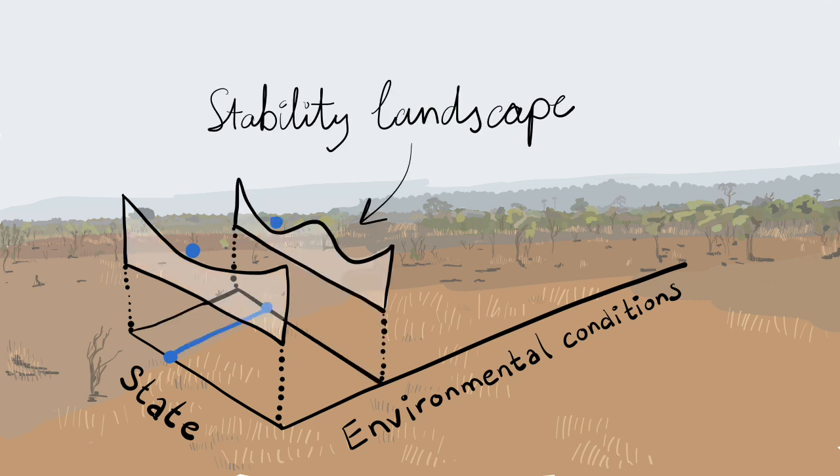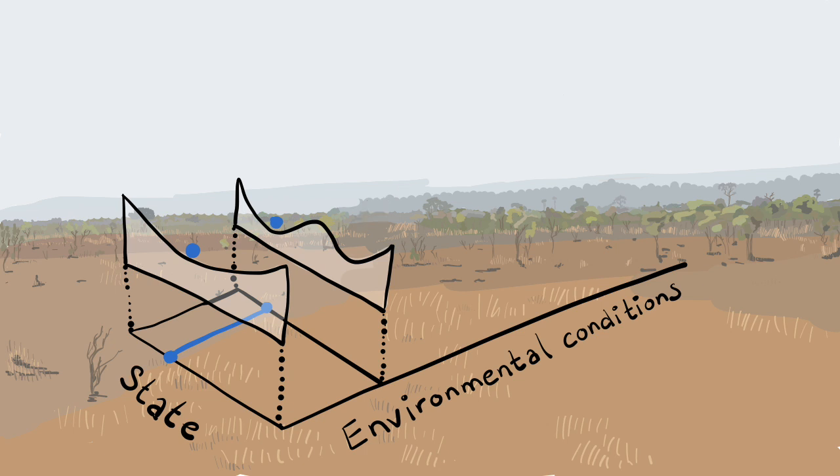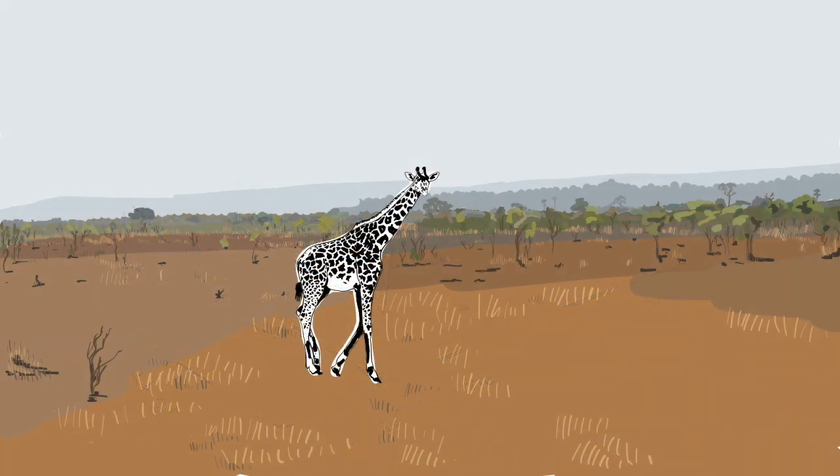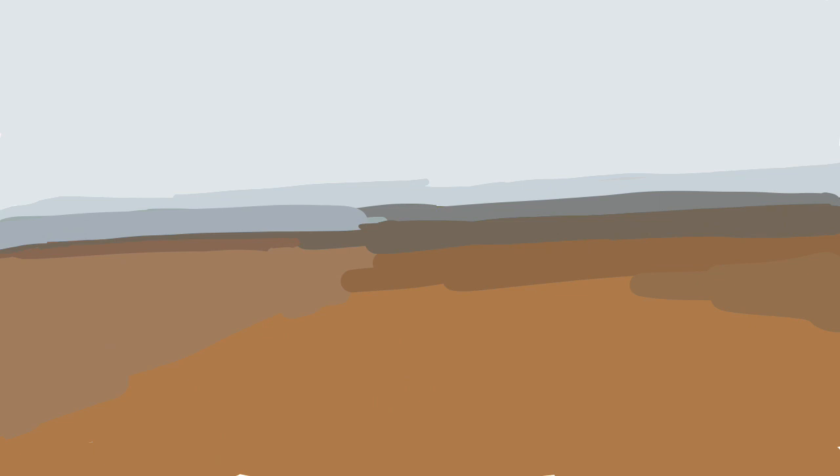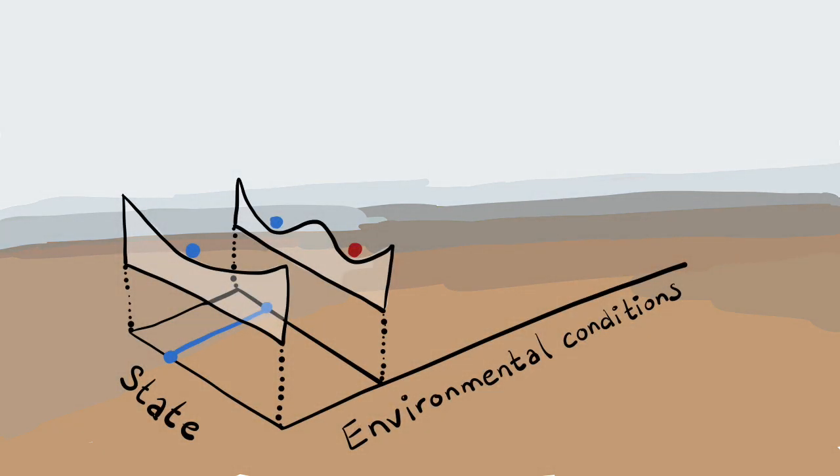The so-called stability landscape may change, introducing the possibility of a second stable state. In this example of a savannah, the second stable state is a desert state, with little or no vegetation.